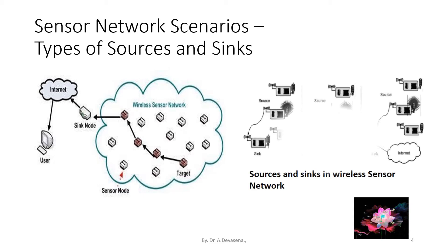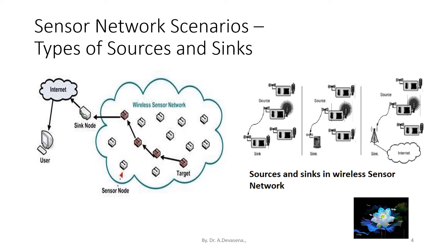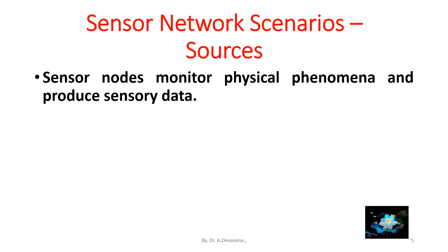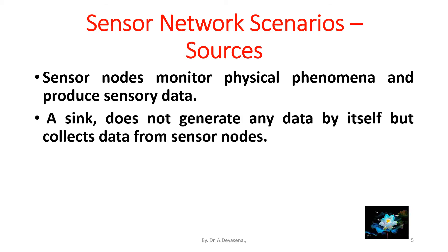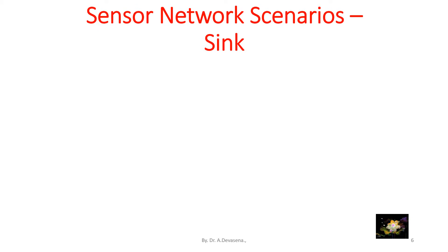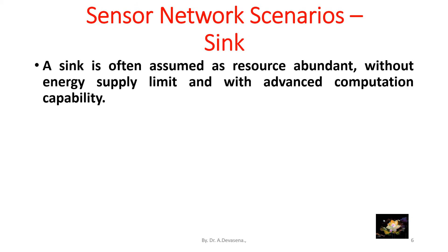Here is another representation of sources and sinks in the wireless sensor network. Sensor nodes monitor physical phenomena and produce sensory data. A sink does not generate any data by itself but collects data from the sensor nodes. A sink can be regarded as a gateway between the sensor network and other networks, or an interface between the sensor network and the people operating it. A sink is often resource-abundant, without energy supply limits, and with advanced computation capability.